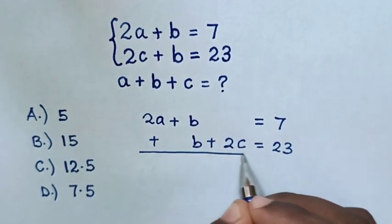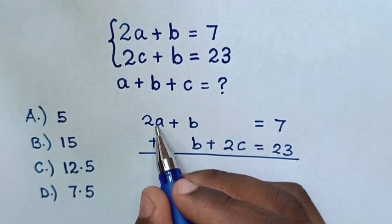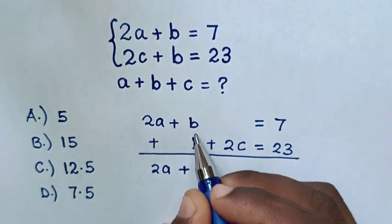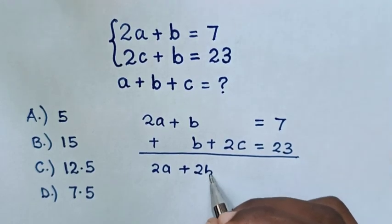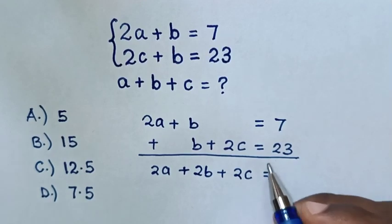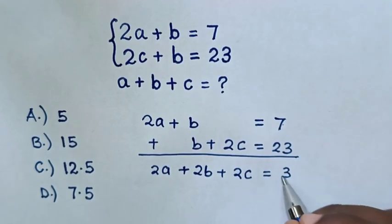This will be equal to 2A plus 2B (this plus this) plus 2C equals 30 (this plus this).